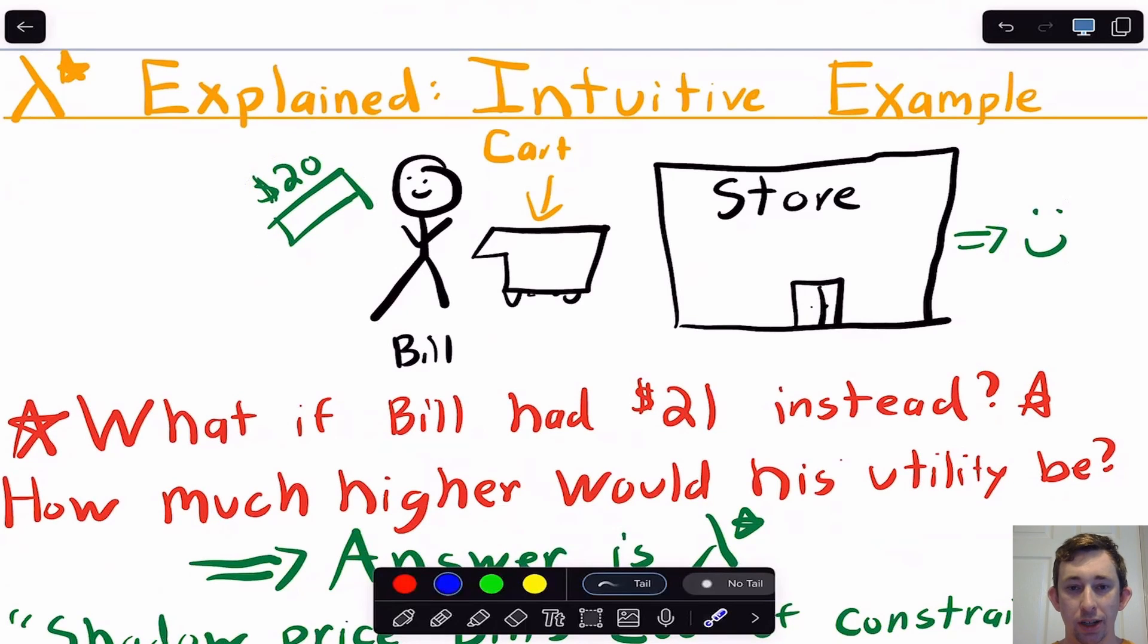If Bill is walking in with $20, he's going to do that utility maximization problem, and he's going to choose an optimal cart. What this Lambda Star is going to tell us is, what if instead of $20, Bill walked into the store with $21? Because we're giving Bill an extra dollar, we're sort of relaxing his constraint, because the ceiling or the limit of carts that Bill can buy is based on this $20. If we give him an extra dollar, that's going to give Bill more options in terms of the cart that he can buy at this store. If we're giving Bill more options in terms of the things that he can buy, then that's relaxing the constraint.